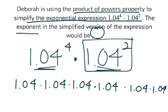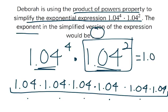So now if you're going to write this whole thing as a big simplified version, you just count 1, 2, 3, 4, 5, 6. The answer is just 1.04 to the power of 6. And the answer they want in this question is what's the exponent? Well, that's just the 6.